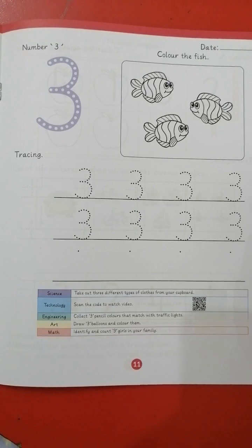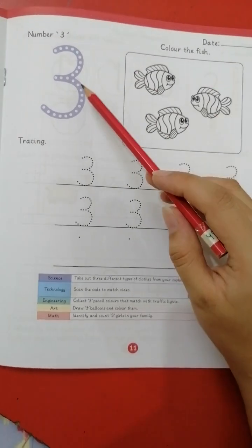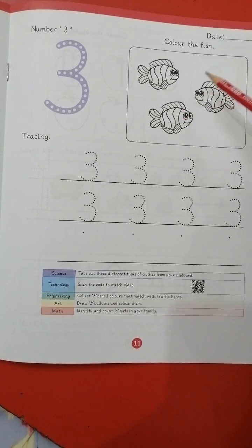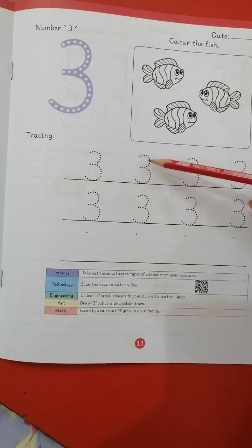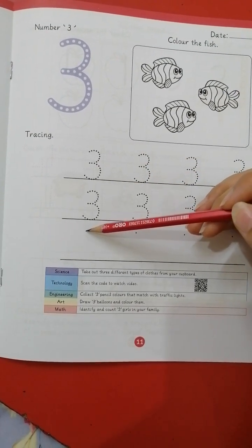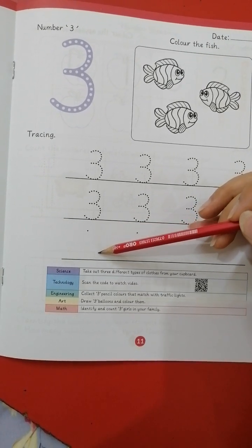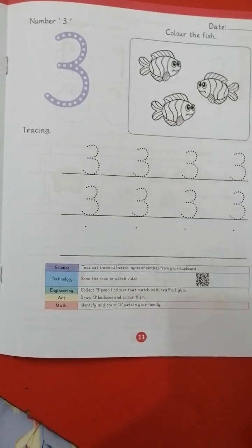Next we have is number three. You have to trace it over here. Count fishes. One, two, three. Color it. Trace number three. And then make independently. One, half a circle, stop. Again go back, make half a circle, join the line. It's number three.